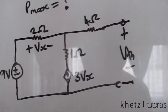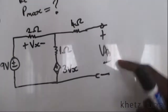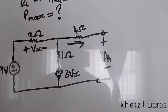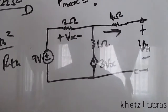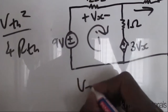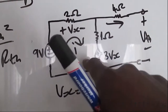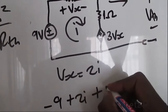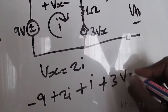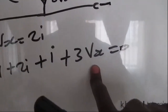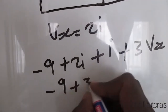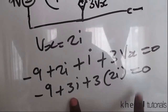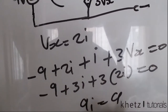I'll use mesh analysis. V_th is in parallel with the branch since there's no current there. Calling the loop current i, vx equals 2i. Writing KVL around the loop: negative 9 plus 2i plus i plus 3·vx equals 0. Substituting vx = 2i gives negative 9 plus 3i plus 6i equals 0, so 9i equals 9, meaning i equals 1 ampere.